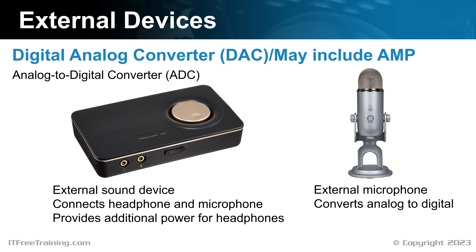The microphone in this example plugs into the computer using USB. The process of converting the analog signal to digital is all done in the microphone itself. For this reason, the microphone is not subject to interference unless you put it next to something creating electrical interference. This also applies to the DAC. You can see why these devices have become popular since they take all of the conversion process away from possible interference that may occur inside the computer. If you are looking at professional-level sound, most people will consider external devices like these. You could also use an internal sound card, but most professionals swear by external devices nowadays. The choice, however, is ultimately up to you.